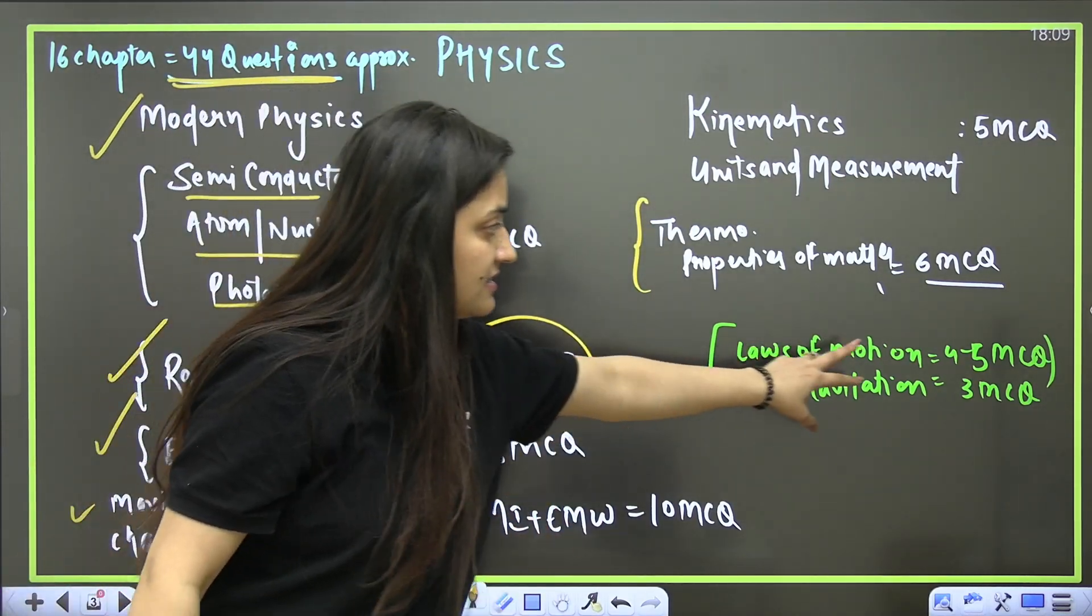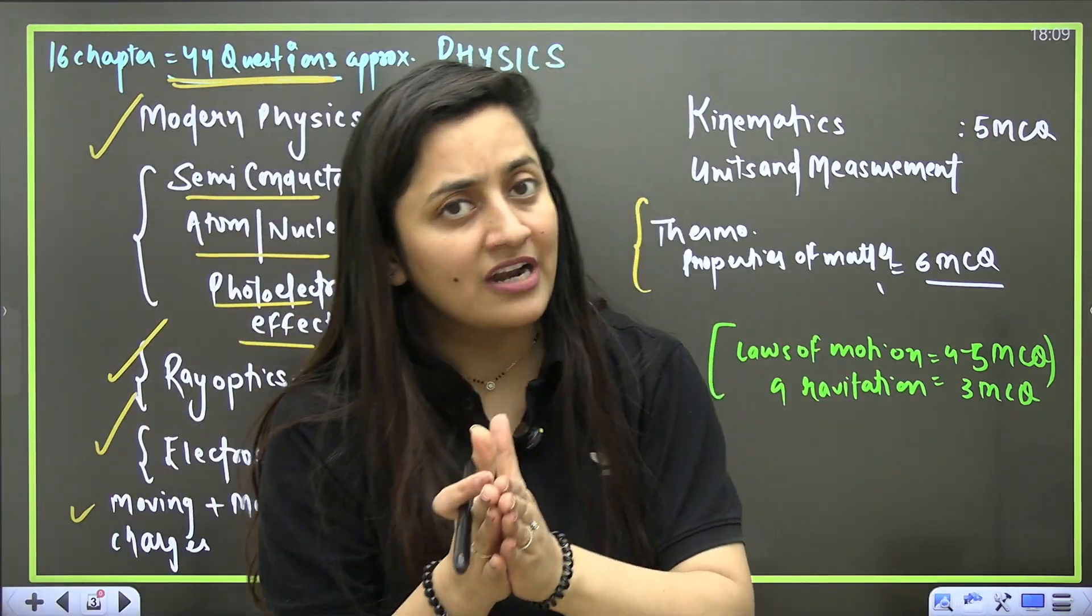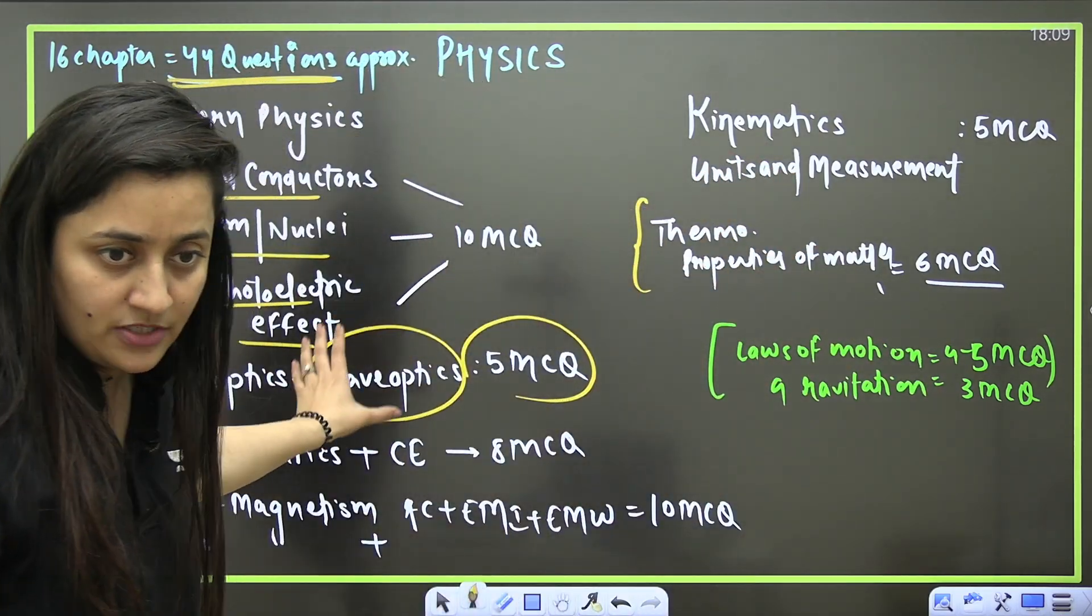Then thermodynamics, properties of matter—6 MCQs approximately. When it comes to physics, your class 12th is quite scoring. You can focus on there first and then you can go for these chapters.